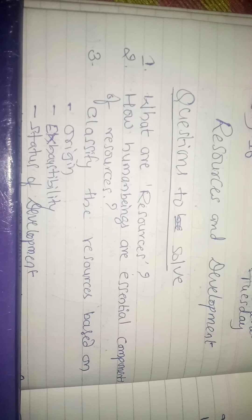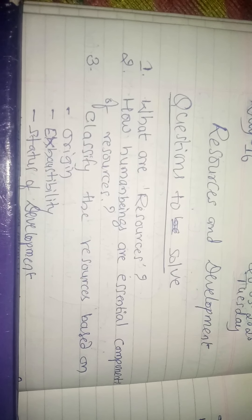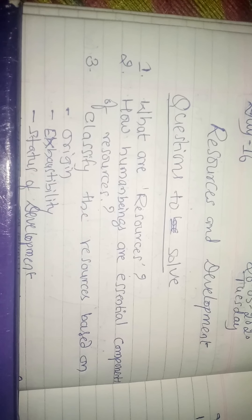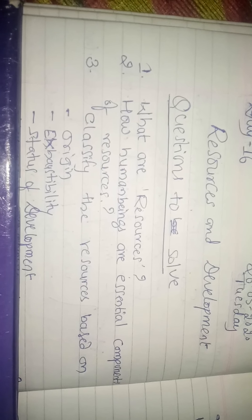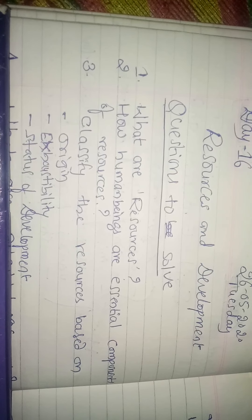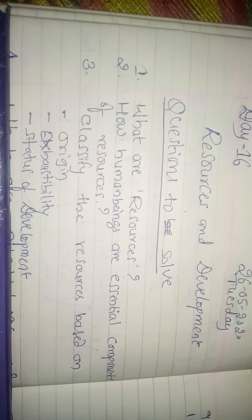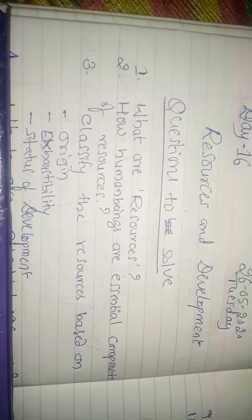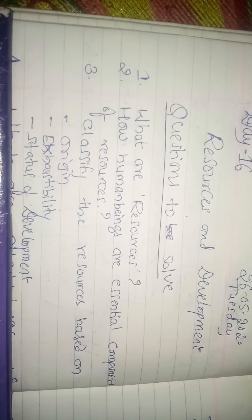Question number three: classify resources. Three sub-parts are given — on the basis of origin, resources are categorized into two: biotic and abiotic resources. On the basis of exhaustibility, resources are categorized into two: renewable resources and non-renewable resources. Based on the status of development, resources are categorized into four: potential, developed, stock, and reserves — P, D, S, R.